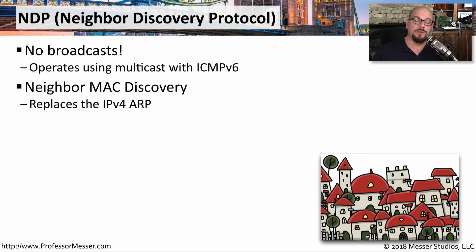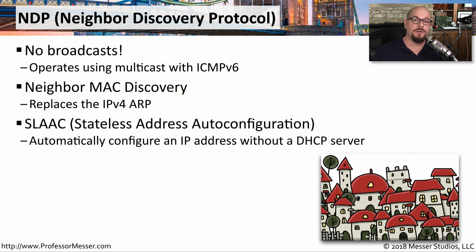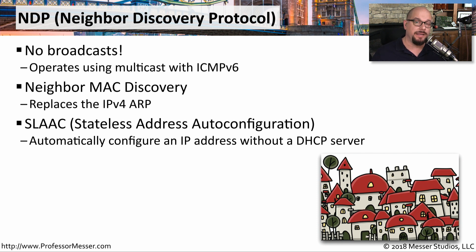For example, in IPv4, we have the Address Resolution Protocol, which uses broadcasts to find other devices' MAC addresses. We have similar functionality in IPv6 using NDP, and it's called Neighbor MAC Discovery, which effectively performs the same function as ARP in IPv4. Another function of IPv6 that uses NDP is SLAAC, the Stateless Address Auto Configuration, which allows all of your devices to automatically configure themselves with IP addresses without having to access a DHCP server.